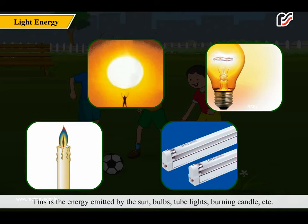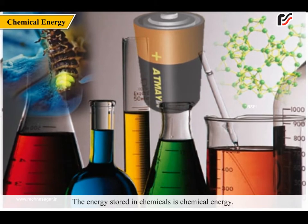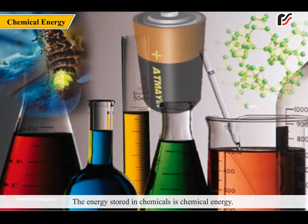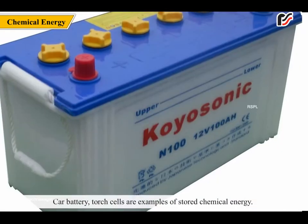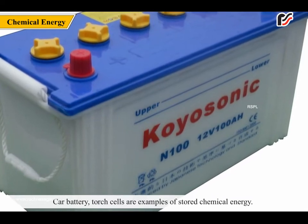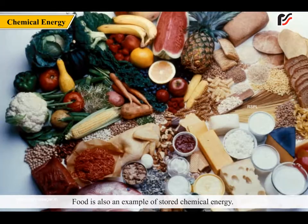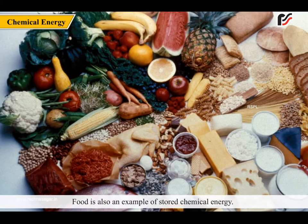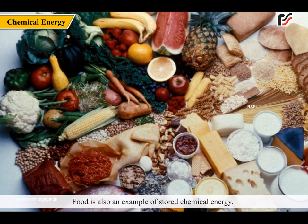Light energy is the energy emitted by the sun, bulbs, tube lights, burning candles, etc. Because of this form of energy, we are able to see. The energy stored in chemicals is chemical energy. Car batteries and tar cells are examples of stored chemical energy. Food is also an example of stored chemical energy.